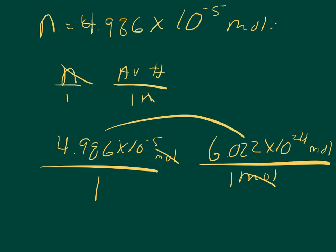We can multiply these two numbers. And when we do, we'll find that we have 3.0025 times 10 to the 19th molecules of gas, or whatever you want to call it.